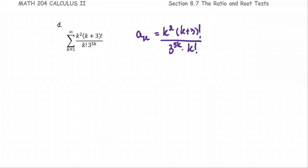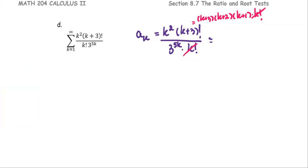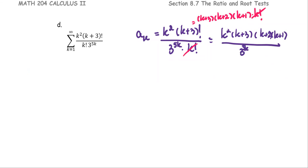We expand k plus 3 factorial as k plus 3 multiplied by k plus 2 multiplied by k plus 1 multiplied by k factorial. This lets us cancel k factorial, so a_k becomes k squared multiplied by k plus 3, k plus 2, and k plus 1, all divided by 3 to the power 5k.